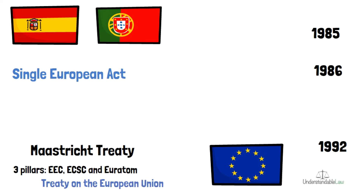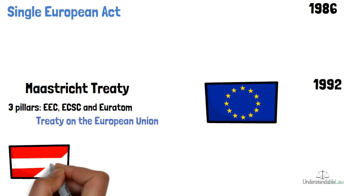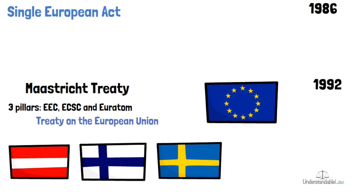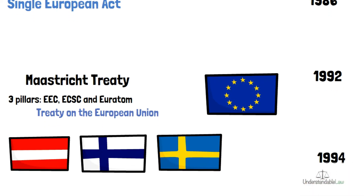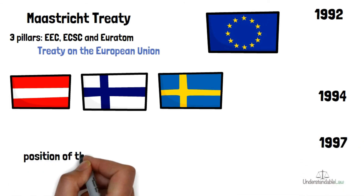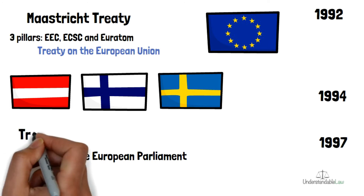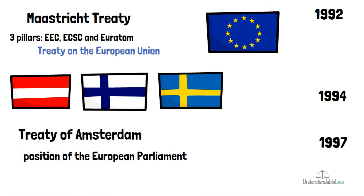After that, developments accelerated. Austria, Finland and Sweden joined in 1994. In 1997, the position of the European Parliament was strengthened through the Treaty of Amsterdam. And in 1999, the euro came as the common currency.